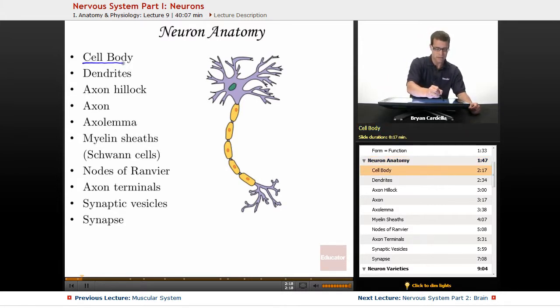The cell body is this part right up here. The cell body is where you're going to have most of the organelles that you see in a typical cell. This green dot is the nucleus. You're going to see mitochondria, ribosomes, etc.